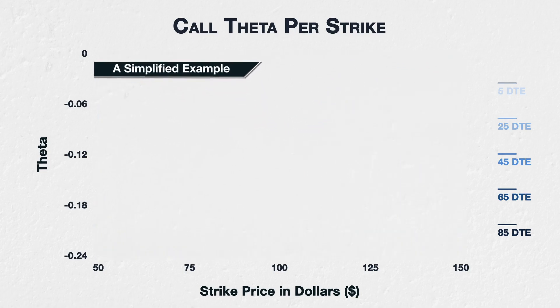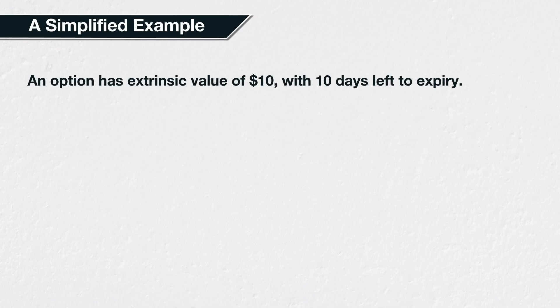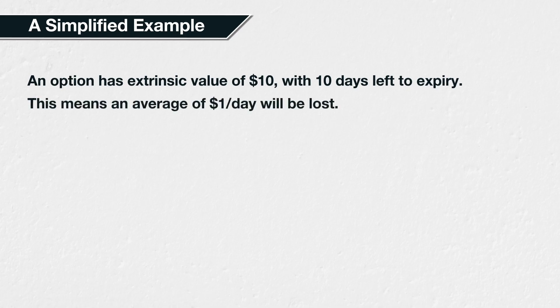To help illustrate this concept, let's use a simplified example. Imagine an option has a value of $10 and 10 days left to expiry. While it's not going to be exactly equal to theta decay, we could say that this option is going to lose an average of $1 a day for the next 10 days. We can think of this $1 a day figure as a simplified average version of theta.